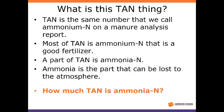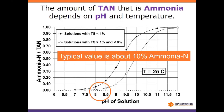This TAN thing — a lot of producers, we never actually say TAN to them. We call it ammonium N, and when they get an analysis back from the lab it says ammonium N. But the ammonia piece is always included. So the next question is: how much of this TAN is ammonia that could be lost? And this is a chart where the solid black dots show something that's highly pH dependent.